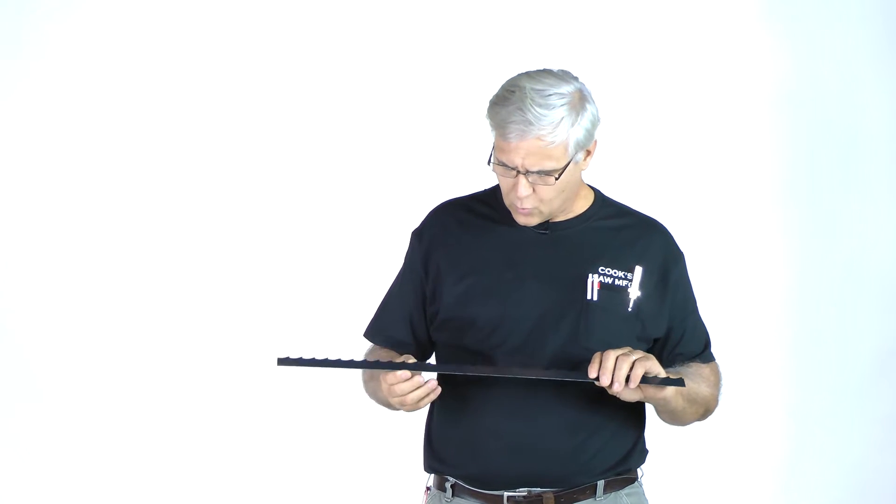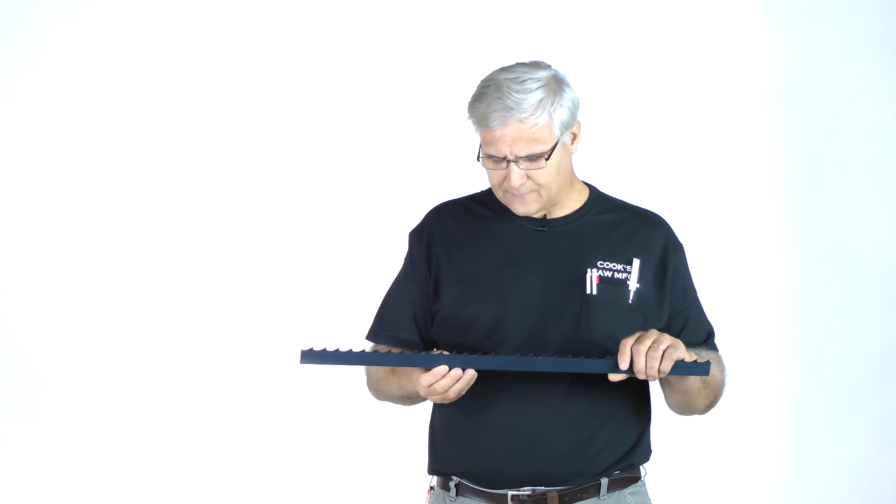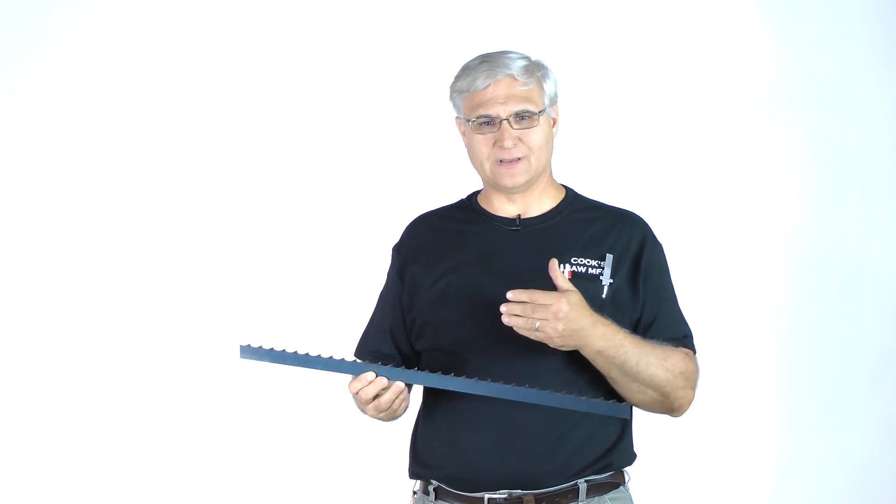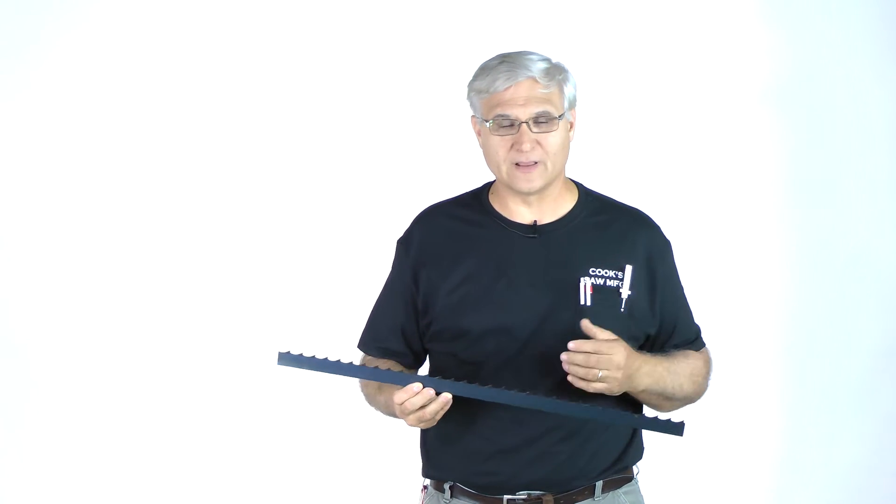This is an inch and a quarter blade, and the gullet depth really varies. They used to make shallow gullets, and now people make deep gullets—there are gullets all over the place anymore.